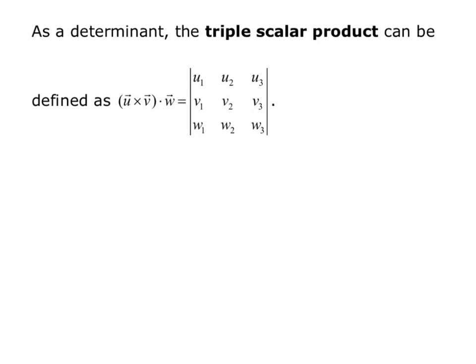As a determinant, the triple scalar product u cross v dotted with w equals the determinant of the 3×3 matrix where u is the first row, v is the second row, and w is the third row.